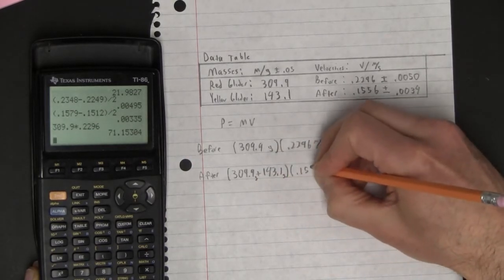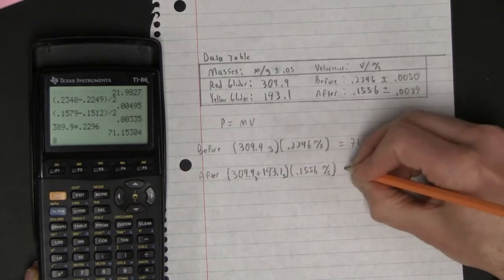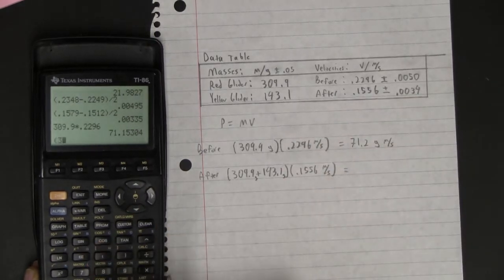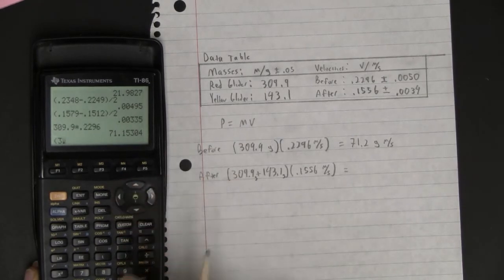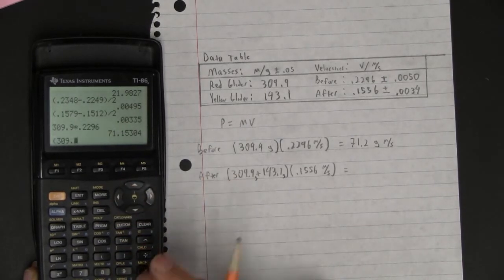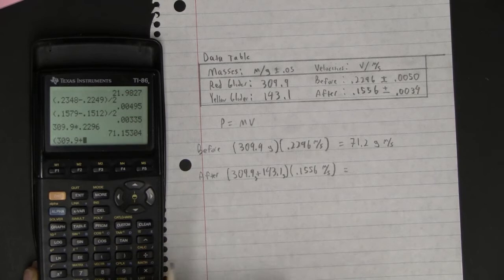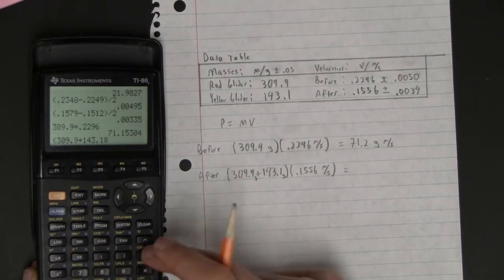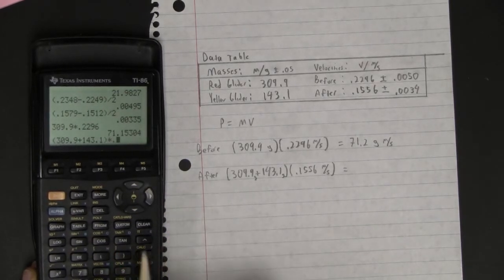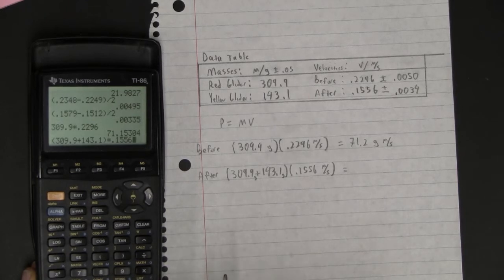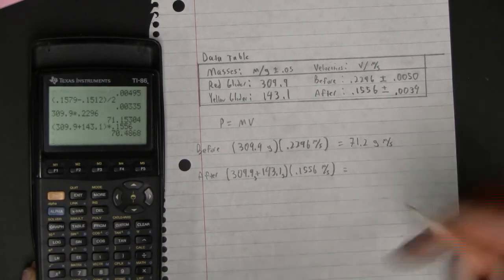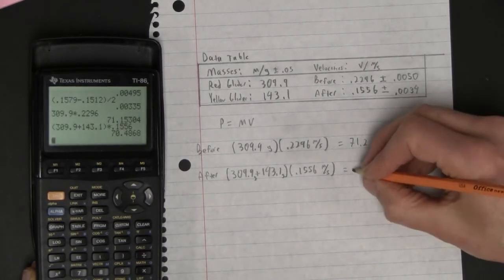So that's going to look like 309.9 plus 143.1 times .1556. And this is remarkably close. I'm going to say that's 70.5.